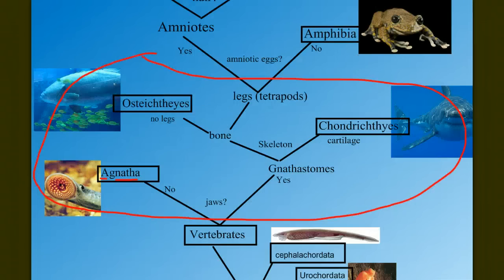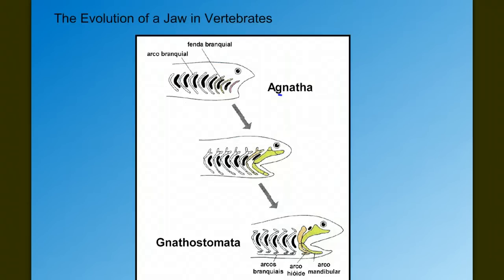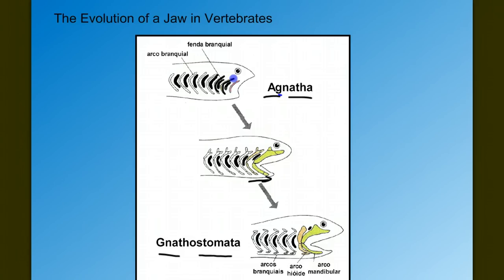Moving on from the Agnathans, we have to discuss the development of a jaw. The gnathostomes — 'gnath' means jaw and 'stome' means mouth — are the vertebrates that have a jaw. The idea is that the bony gill arch, which could be cartilage or bone, evolved over time into the jaw. The frontmost of these gill arches moved forward and became what we know today as a jaw. So we went from Agnatha, lacking a jaw, to the gnathostomes, the jawed-mouth animals.